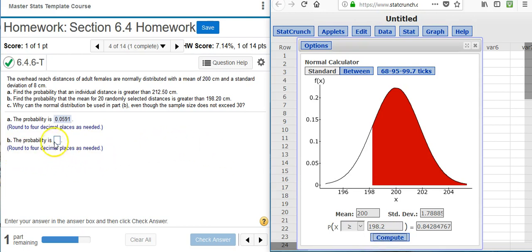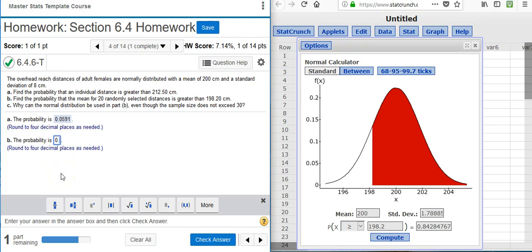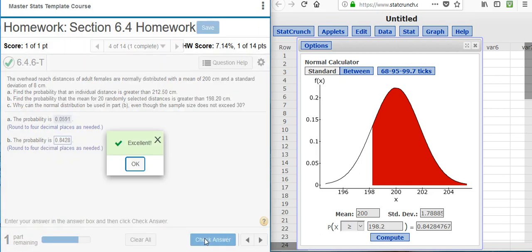I want to round to 4 decimal places. So I do that, put my answer in, press Enter, or check answer, Excellent!